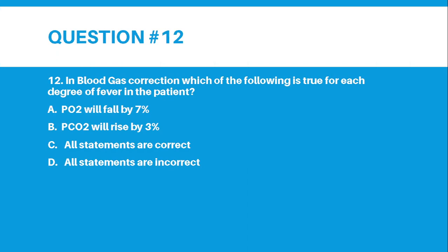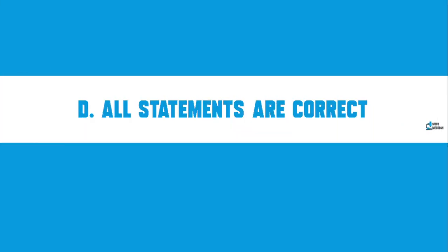Number 12. In blood gas correction, which of the following is true for each degree of fever in the patient? A. PO2 will fall by 7%, B. PCO2 will rise by 3%, C. All statements are correct, or D. All statements are incorrect. The correct answer for number 12 is letter D — all statements are incorrect.